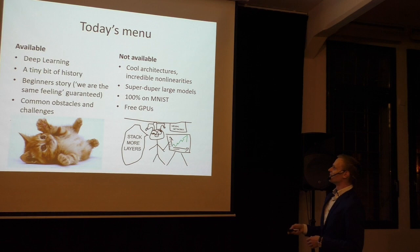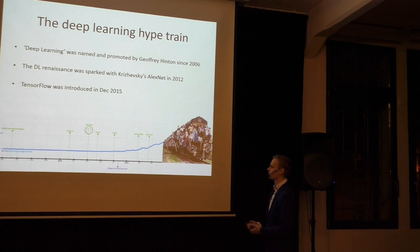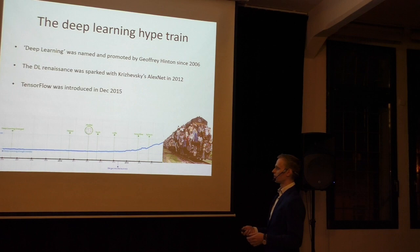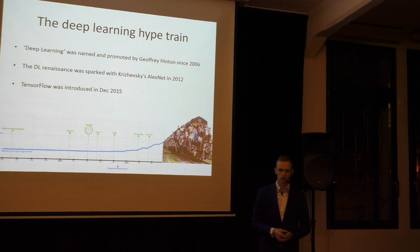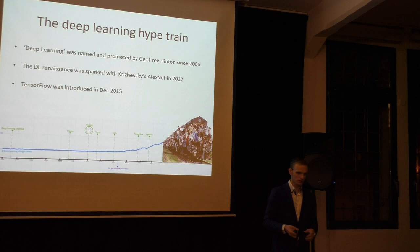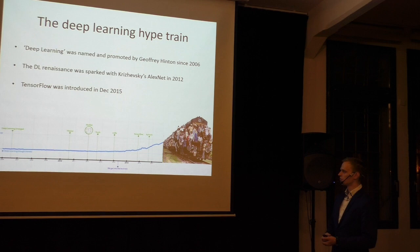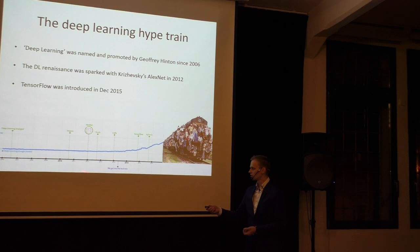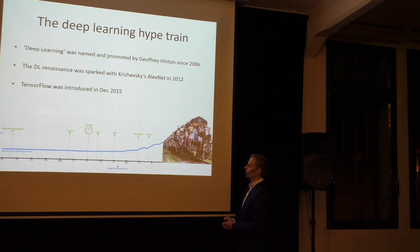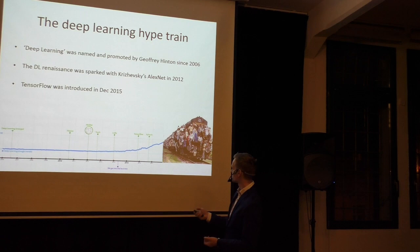So let's start with the hype train — it's indeed a hype train. I did a bit of research on this timeline. The term 'deep learning' emerged in 2006. It was Hinton who first used it, claiming he was going deeper than others with deep autoencoders, stacked and trained iteratively. But it was really six years later with Krizhevsky's AlexNet which sparked the renaissance of deep learning. So it's almost six years now.